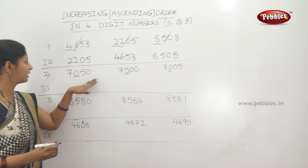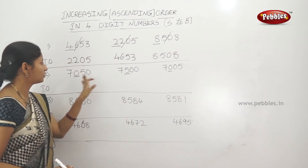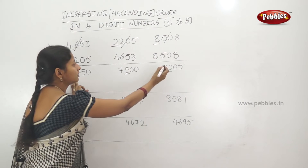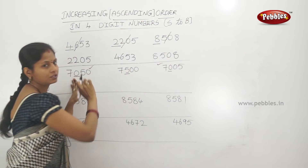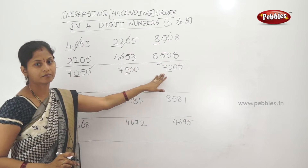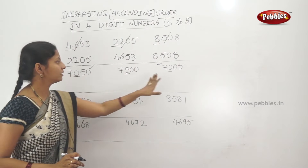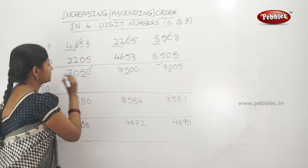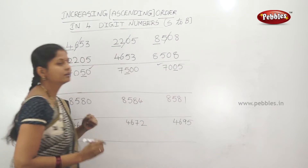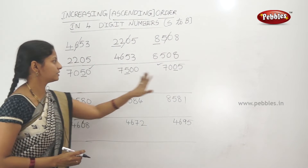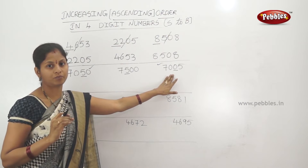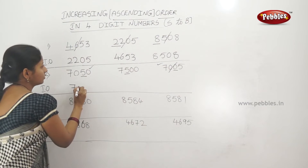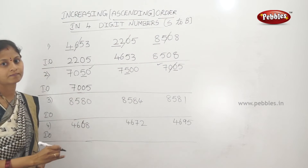The second digits are the same for two numbers. Comparing the second digits: 0, 5, 0. The smallest is 0. For the two numbers with second digit 0, we move to the third digit. Third digits are 5 and 0. Comparing 5 and 0, the smallest is 0. So 7,005 is the smallest number.